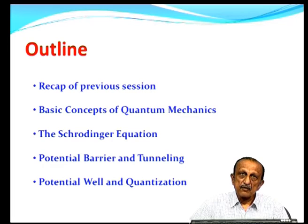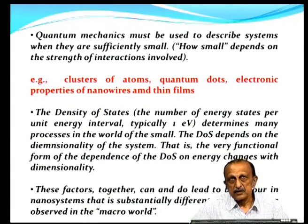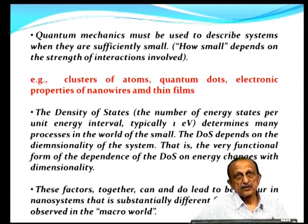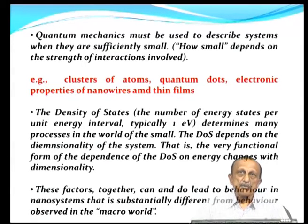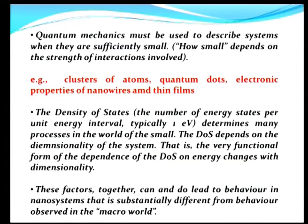What we did last time was to point out that quantum mechanics must be used to describe systems when they are sufficiently small, and how small they should be depends on the strength of the interactions involved among the particles. So you can have clusters of atoms, quantum dots, electronic properties of nano wires and thin films — all dealt with as quantum systems. The density of states, the number of energy states per unit energy interval in electron volts, is an important aspect of dealing with nano systems.